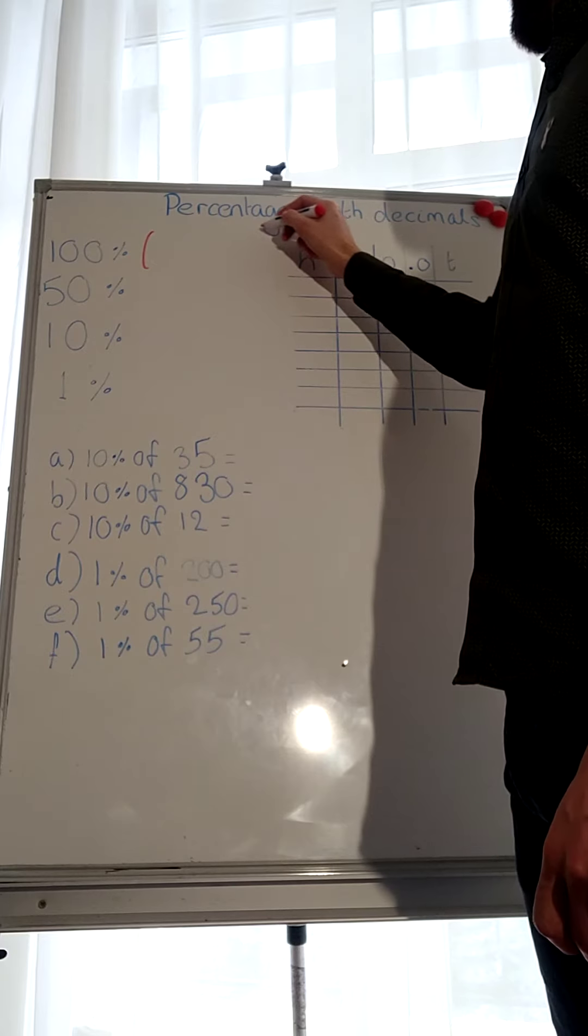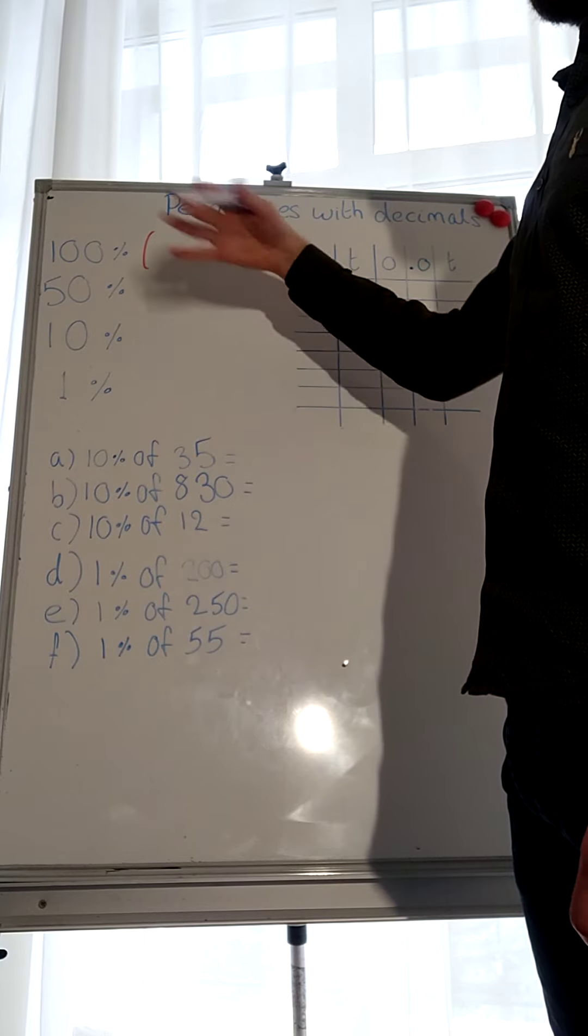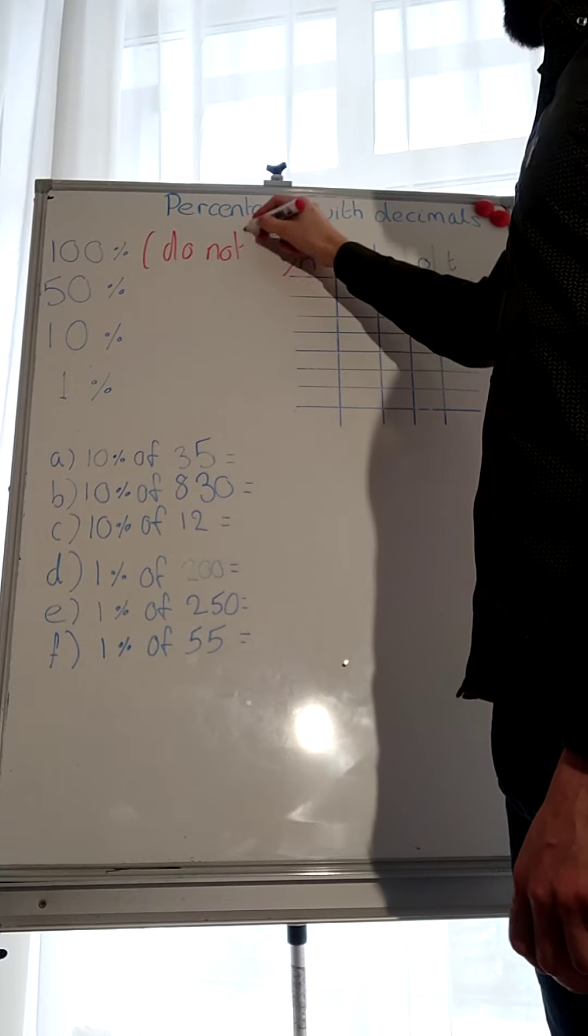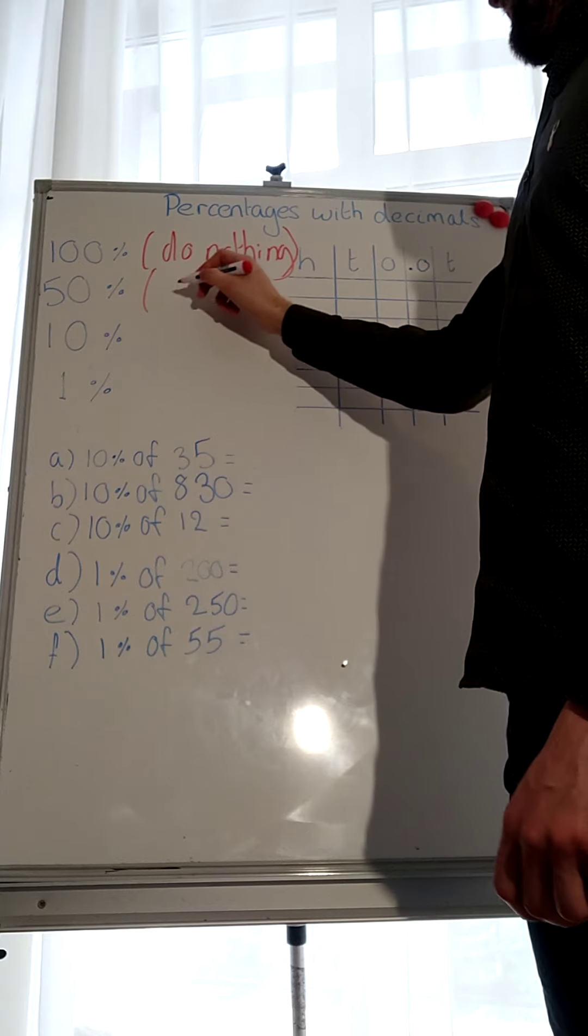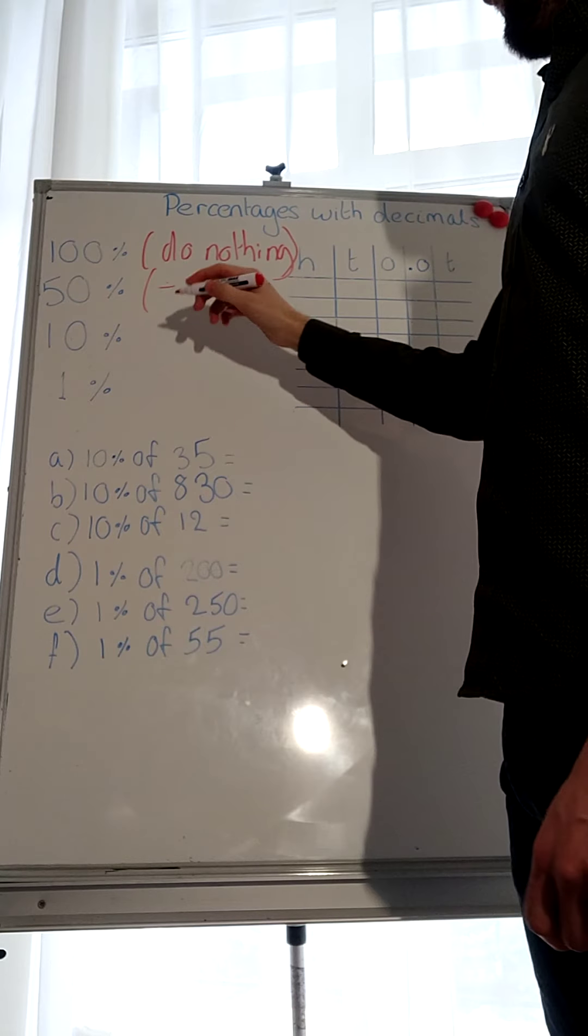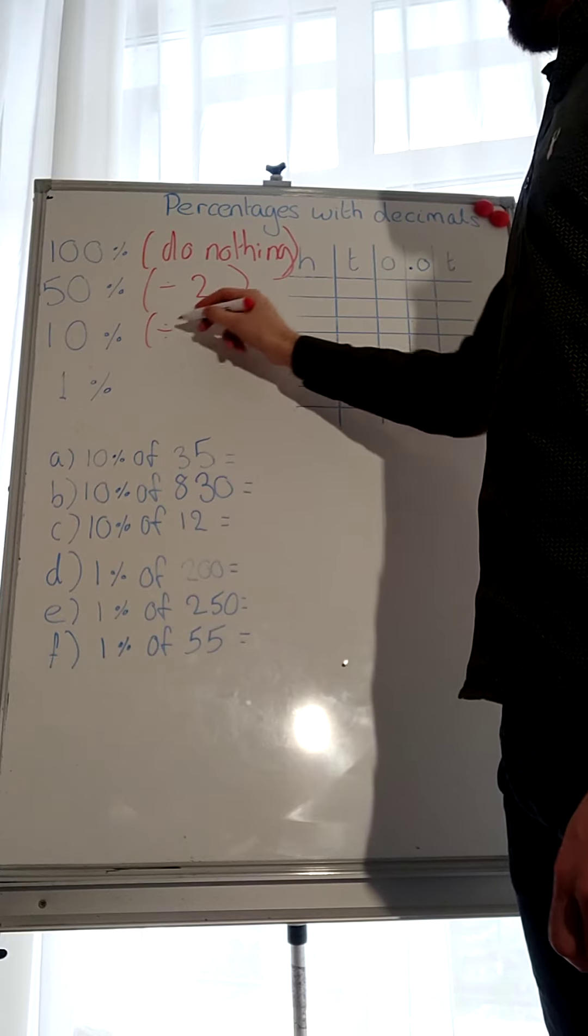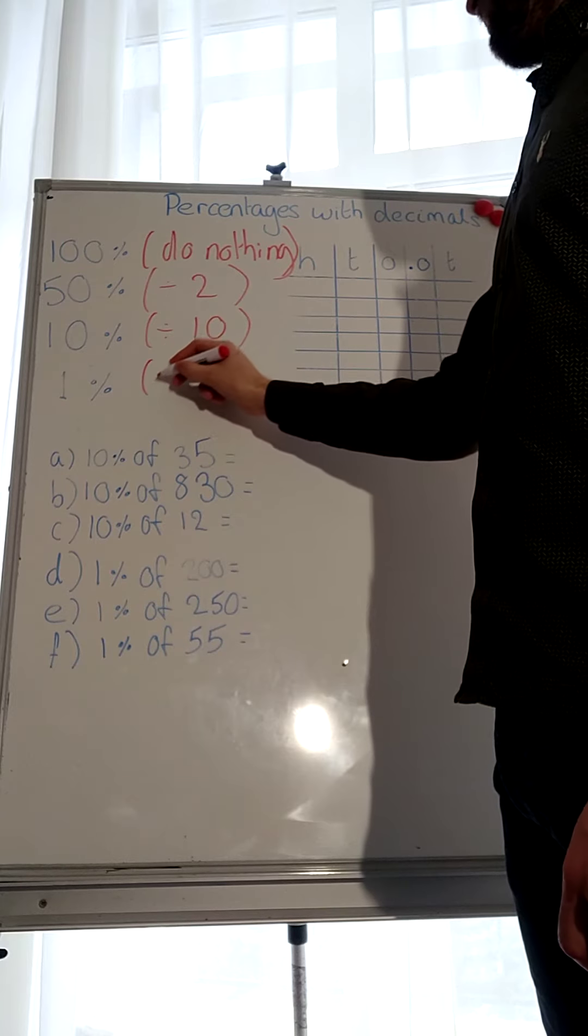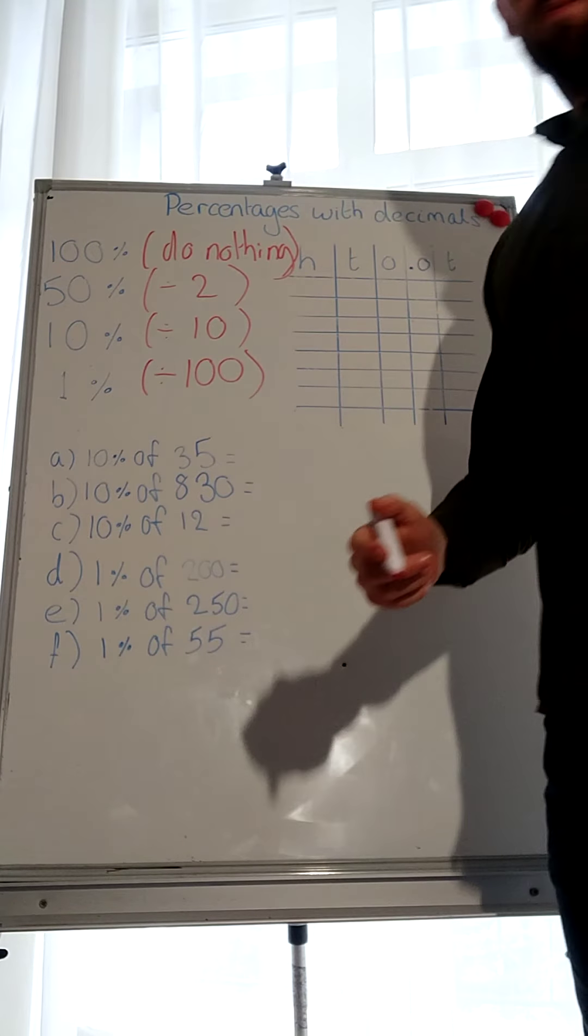Right, so let's look at how do we calculate 100% first. So do we divide it by 2, do we divide it by 10, or do we do nothing? Nothing at all, zero change. What about 50%? Divide by 2, simple. For 10%, do we divide by 100, or divide by 10? Divide by 10. For 1%, divide by 100.